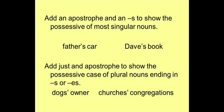Agar baat ho rahi hai plural noun ko possessive case mein change karne ki — jaise dog ka plural dogs ho gaya, to yahan pe already end mein s laga hua hai, isliye sirf dogs ke baad apostrophe mark lagaya hai aur uske baad owner likha hai — dobara se s lagane ki zaroorat nahi hoti. Second is churches — churches mein already es joda hua hai, iske saath alag se s ko nahi jodna hai, sirf apostrophe lagana hai. Yeh hamare plural noun ke examples ho gaye.